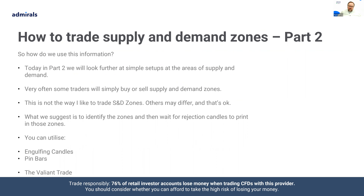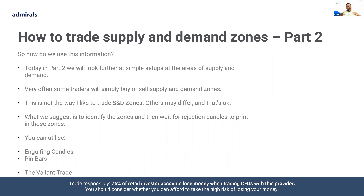We'll look at further simple setups at areas of supply and demand. Very often some traders will simply buy or sell the supply and demand zones — once they've identified a supply zone they'll have a short order for when price returns to it, and once they've identified a demand zone they'll have a buy order. That is not the way I particularly like to trade supply and demand zones, though others may differ. Part of this comes into a bigger conversation about risk sentiment — where you sit on the risk spectrum. Some people are very aggressive and accepting of risk; others are very risk averse.